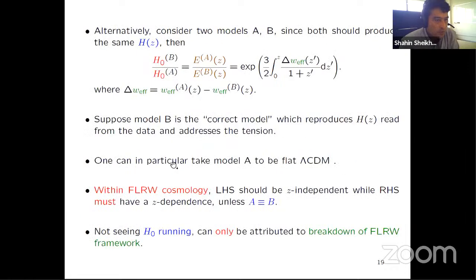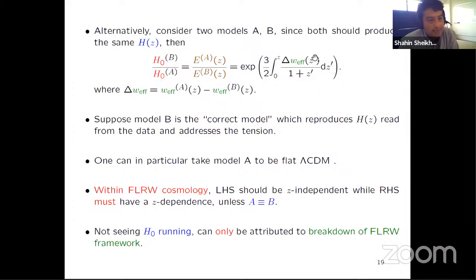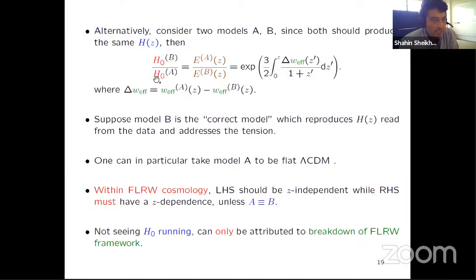One can also write the equation in another suggestive formula. Suppose we have two models A and B, each with a value of H_0 and E(Z). The ratio of the two E(Z) is an integral from zero to Z over some function of Z. The only way the left-hand side could be a constant is if this integral is zero, meaning the two models are identical. So if the two models are not identical, the left-hand side — the running H_0 — should run within FRW. If we don't see any running, either the two models are identical or FRW is broken.